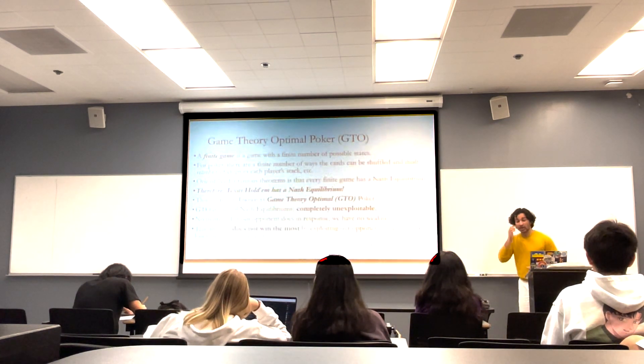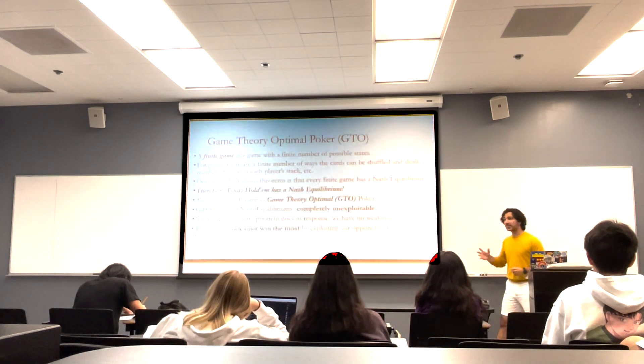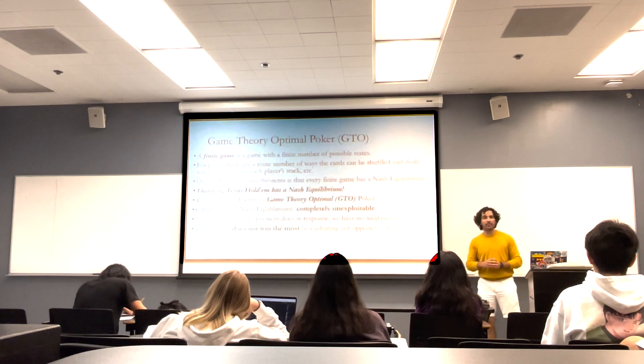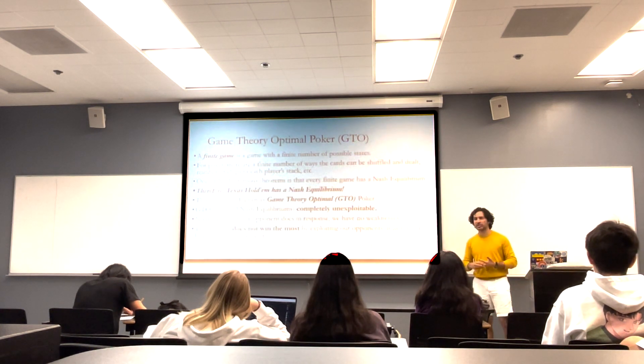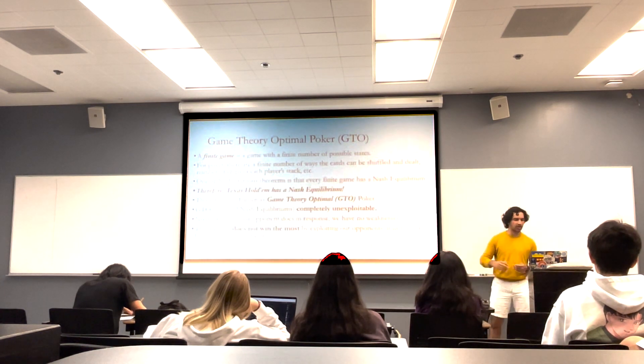Specifically, we can use two from our hand and three from the board, one from our hand and four from the board, or zero from our hand and five from the board — it's just the best five-card hand. We then did a brief discussion about what GTO is, Nash equilibrium, GTO poker, et cetera.